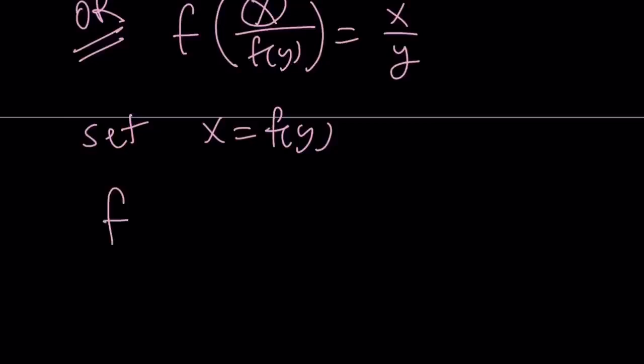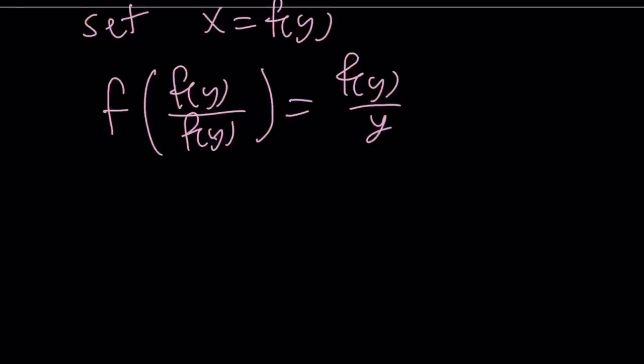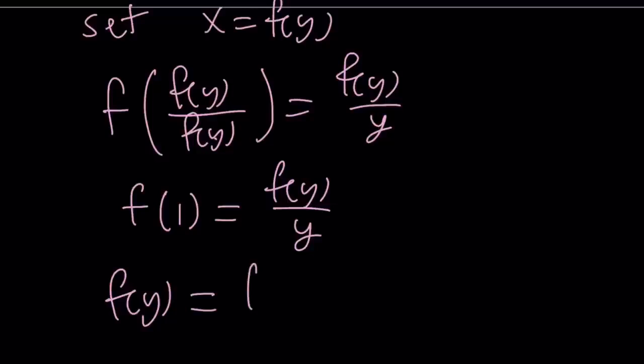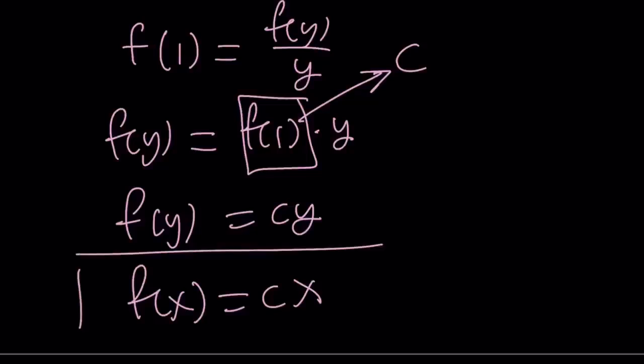And from here, we get the following. If you replace x with f of y, you're going to get f of f of y over f of y equals f of y over y. But f of y over f of y is 1 because they're not 0, hopefully. Then we get f of 1 equals f of y over y. And this gives us f of y equals f of 1 times y. Now we can go ahead and replace f of 1 with c because it's a constant. And we get the same thing from here: f of y equals cy, which means f of x equals cx. And that's going to be the only solution for this functional equation.